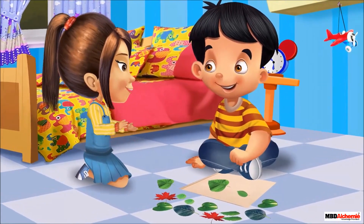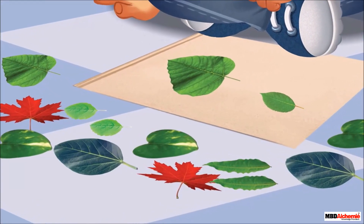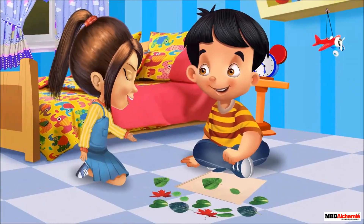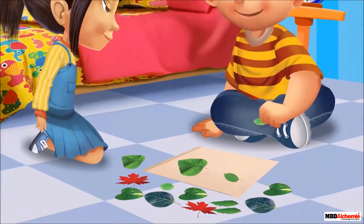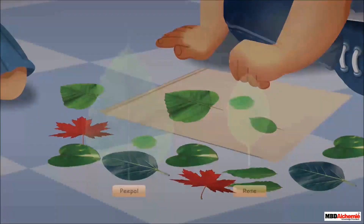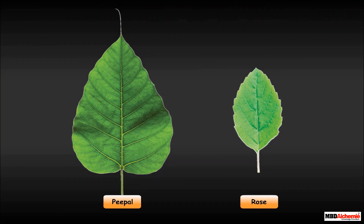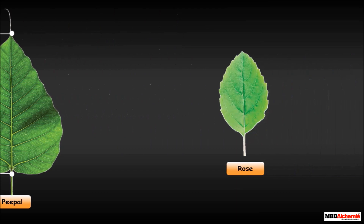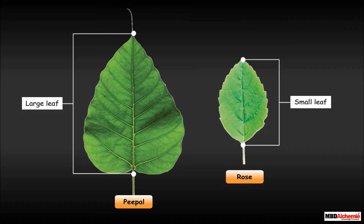Wow! So many leaves of different shapes and sizes. Why have you collected all these leaves? I have collected these for my school project. Can I watch the project, please? Of course you can. Look carefully. You can see that leaves have different shapes and sizes. Some trees, like the peeple tree, have large leaves, while others, like the rose plant, have small leaves. Even though leaves look different, they have a common structure. Let us study about it.